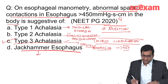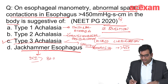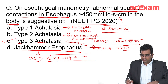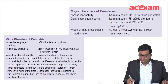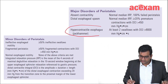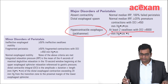Jackhammer esophagus has a distal contractile integral of more than 8000 mmHg·s·cm — that is, abnormal spastic contraction of more than 8000. At least two swallows must show a DCI of more than 8000. This jackhammer esophagus can be asked in the next exam.